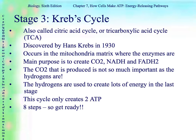It was discovered by Hans Krebs in 1930, and it occurs in the mitochondria — that's where we already are, with our pyruvate changing to acetyl coenzyme A. We're in the matrix, where the enzymes are. The main purpose of the Krebs cycle is to create carbon dioxide, NADH, and FADH2. We're not going to make a lot of ATP in this stage. The key components are making the NADH and the FADH2, because those will be turned into ATP later on. The carbon dioxide produced is not as important as these hydrogens; the hydrogens are used to create lots of energy in the last stage.